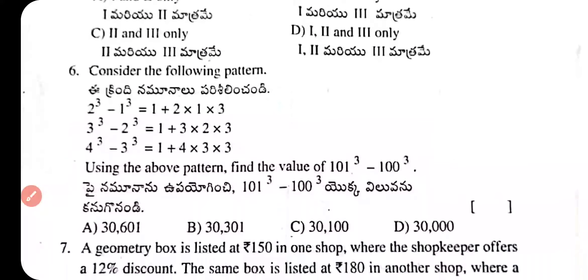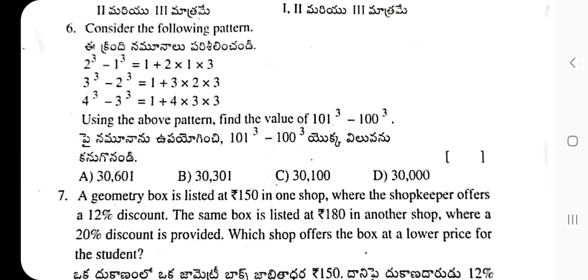Question 6: Consider the following pattern — 2³ minus 1³ equals 1 plus 2×1×3; 3³ minus 2³ equals 1 plus 3×2×3; 4³ minus 3³ equals 1 plus 4×3×3. Find the value of 101³ minus 100³. The correct answer is 30,301.